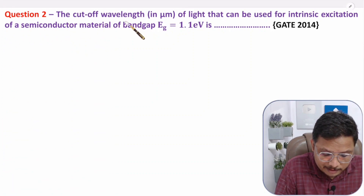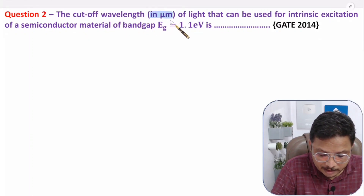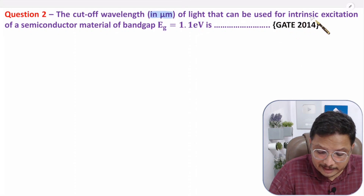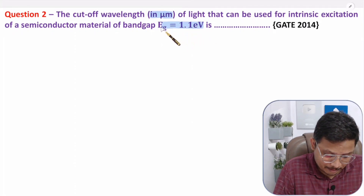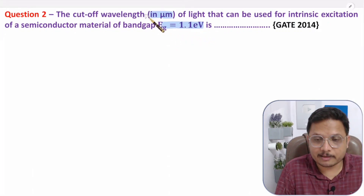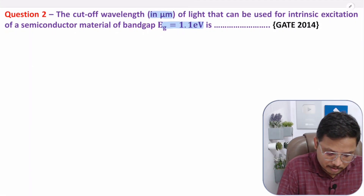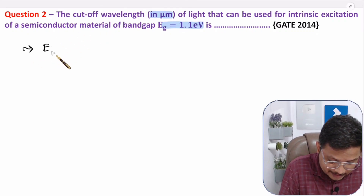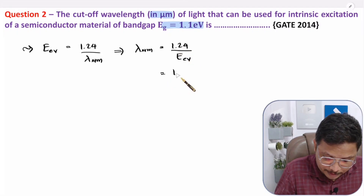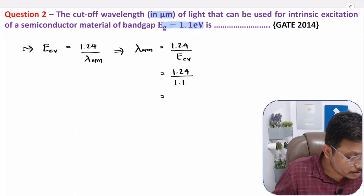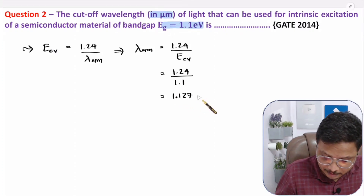In the second question, the cutoff wavelength in micrometer — we are asked to find the cutoff wavelength of light that can be used for intrinsic excitation of a semiconductor material with a band gap of 1.1 electron volt. We are given the energy band gap in electron volt and need to find the cutoff wavelength. Using the same formula, wavelength in micrometer equals 1.24 divided by energy in electron volt. So 1.24 divided by 1.1 gives an answer of 1.127 micrometer.